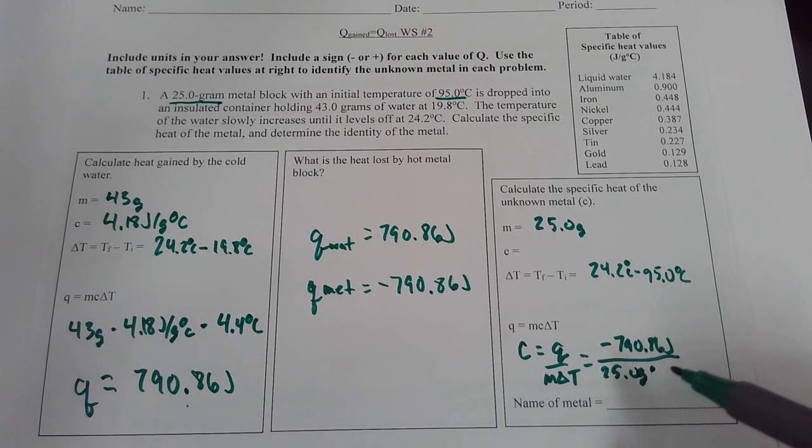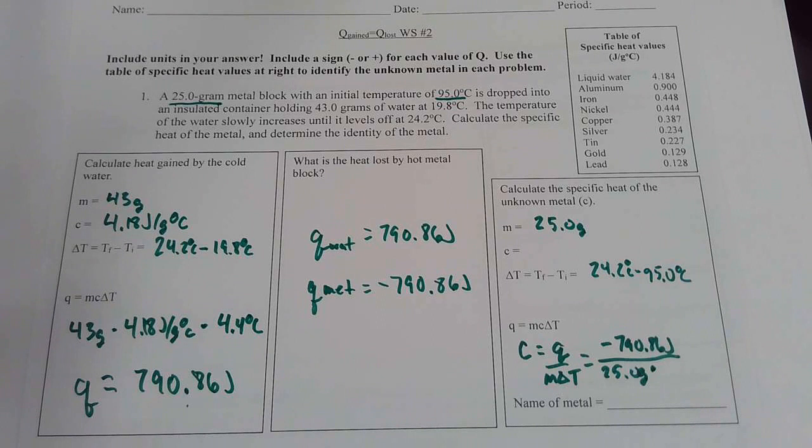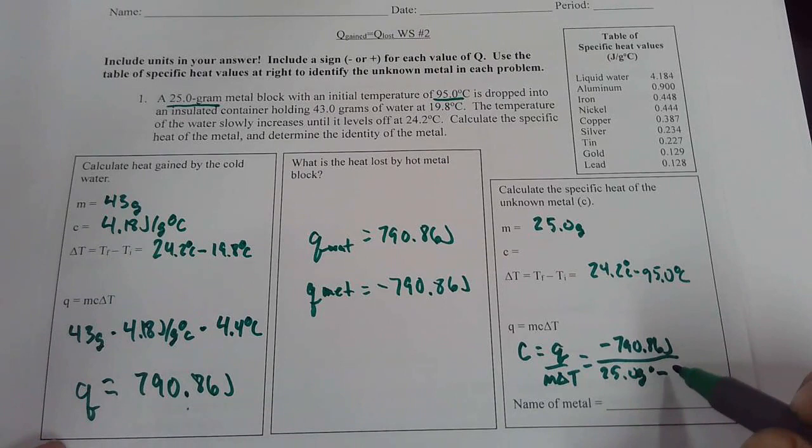So this would be equal to negative 790.86 joules over 25.0 grams times—now we're going to take the 24.2 and subtract 95 from that. So this is going to be negative 70.8 degrees Celsius.